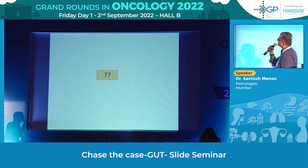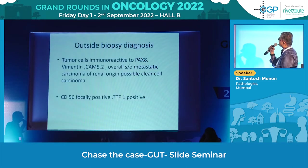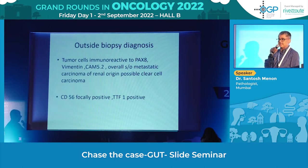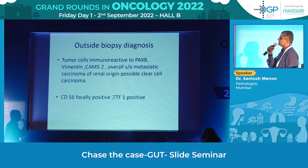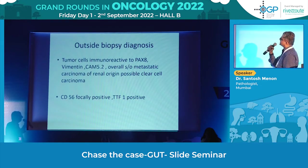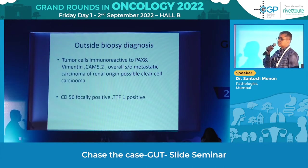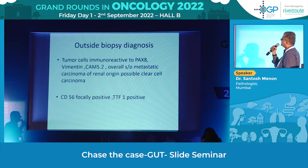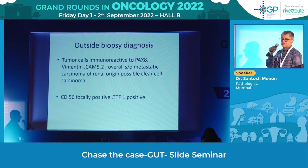The outside biopsy said the tumour cells are immunoreactive for PAX8. Remember there is a kidney tumour also, and this tumour was PAX8, Vimentin, CAM5.2 positive. Overall it was suggestive of carcinoma of renal origin, metastatic, possibly clear cell. CD56 was focally positive and TTF-1 was positive. That was the outside report we received.